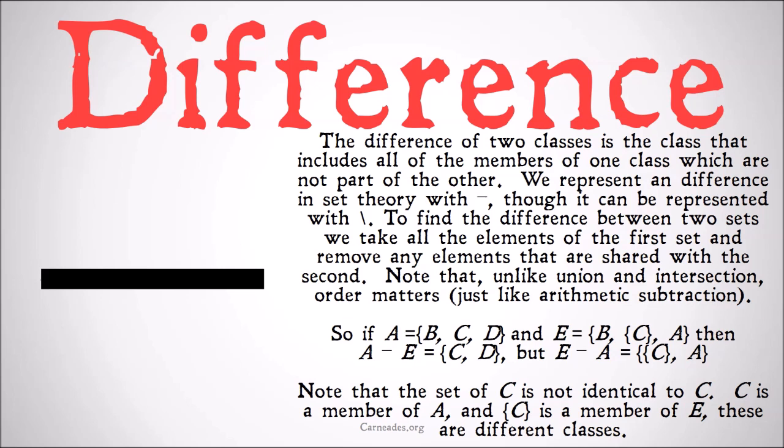But on the other hand, the difference of E and A in the opposite order is the set of {C} and A, because once again we've taken out B but we're left with what's just in E. Note that the set of C is not identical to C. C is a member of A, the set of C is a member of E, and so these are different classes.